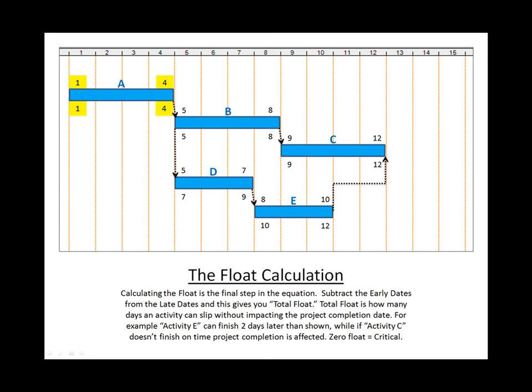If on A we subtract the early from the late, we get zero. Same thing with activity B, and same thing with activity C.